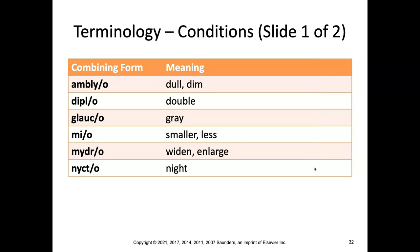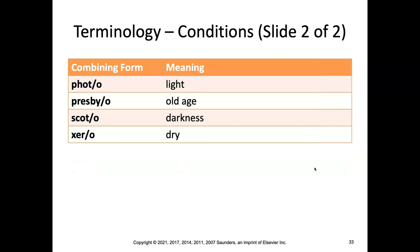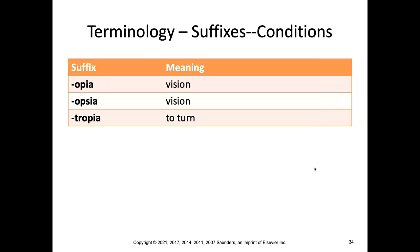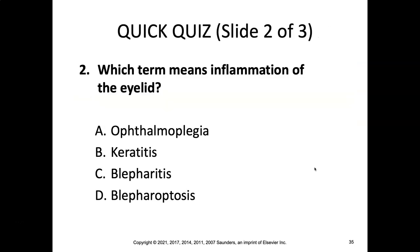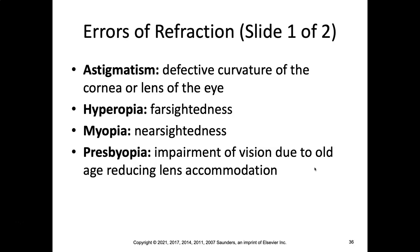Additional combining forms: ambilo, diplo, glauco, myo, mydro, nycto, photo, presbo, scoto, and zero. Some suffixes: opia and opsia both mean vision, and tropia. Practice question: Which term means inflammation of the eyelid? Look for the suffix that means inflammation, then look for the combining form that means eyelid — there's only one that means eyelid.